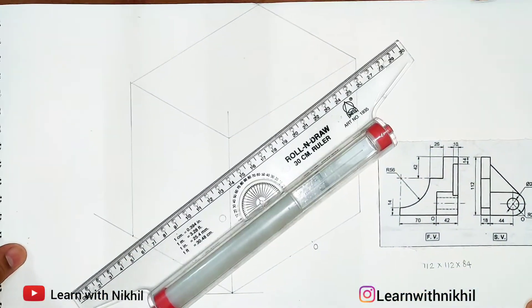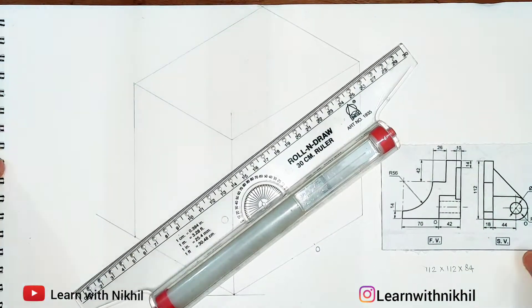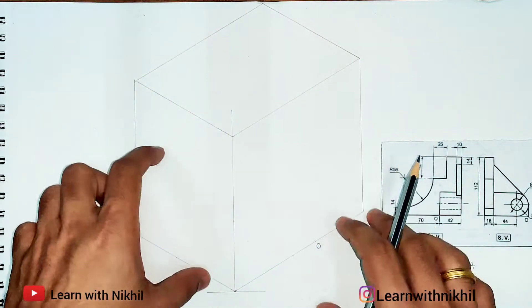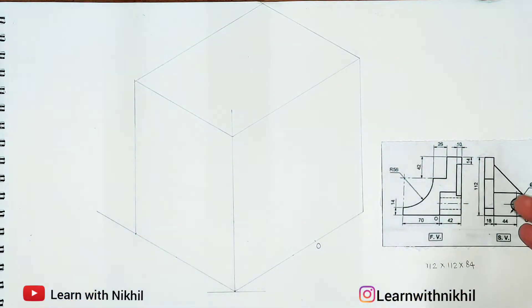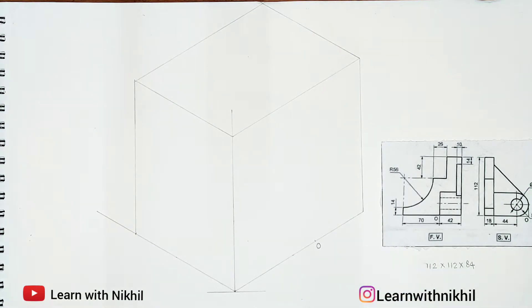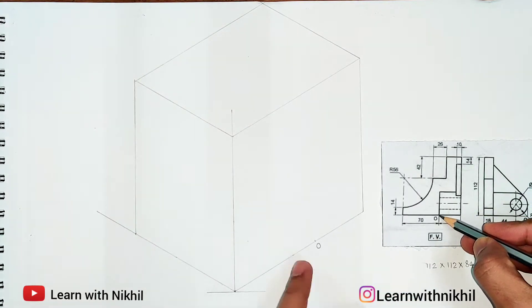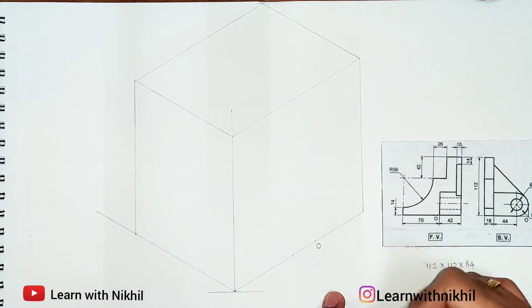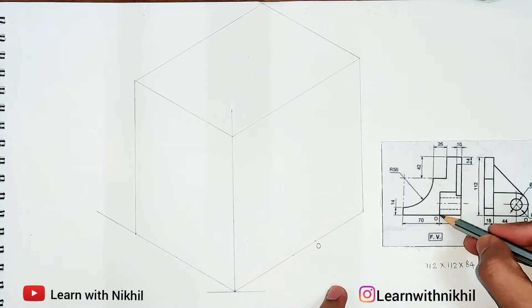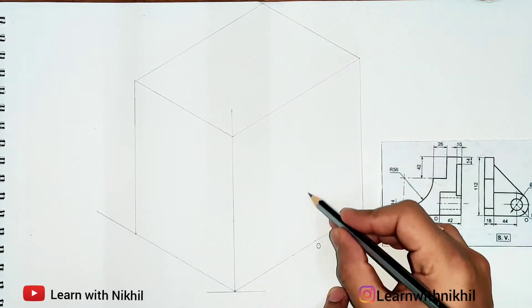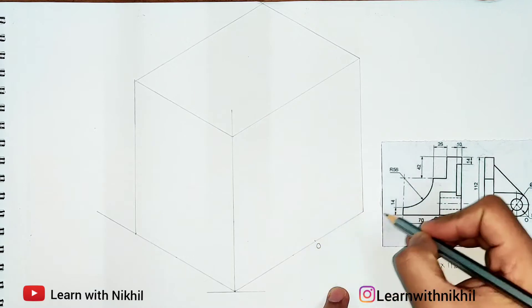We have drawn this rectangular box and our figure is totally inside it. Starting with the sum, from point O you can see we have a rectangle shape — this is the front view.